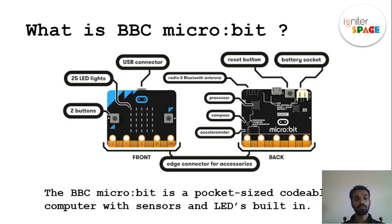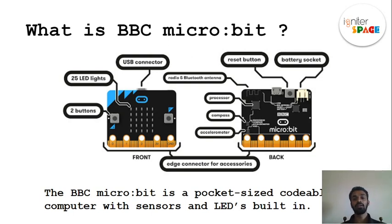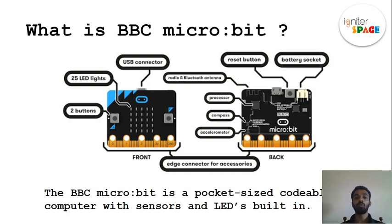The USB connector can also be used to power the Micro:bit with a power bank. On the edge, we have an edge connector for extensions you can add to the Micro:bit, such as a battery, LED, or buzzer.